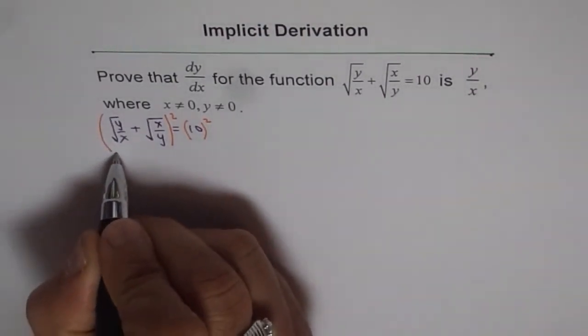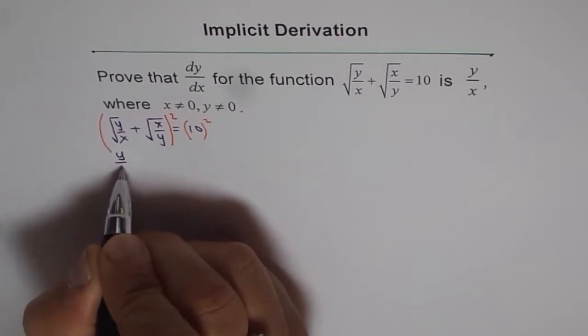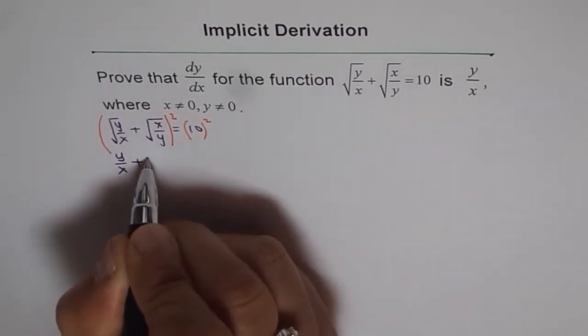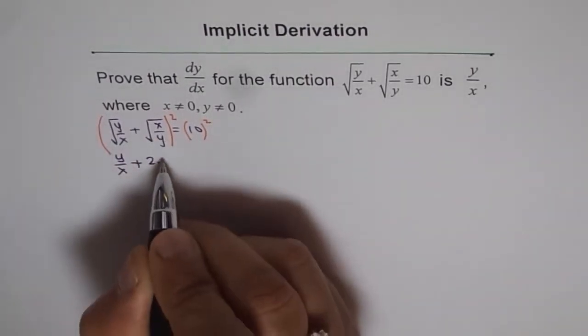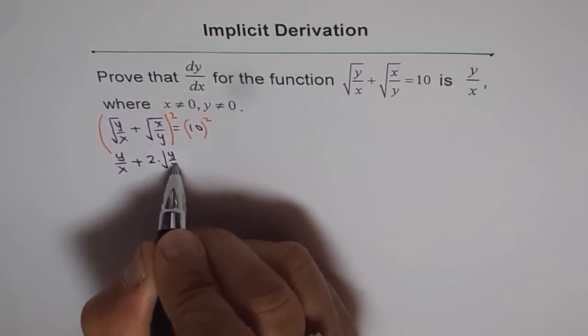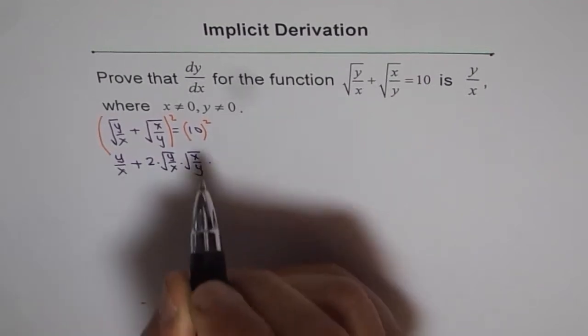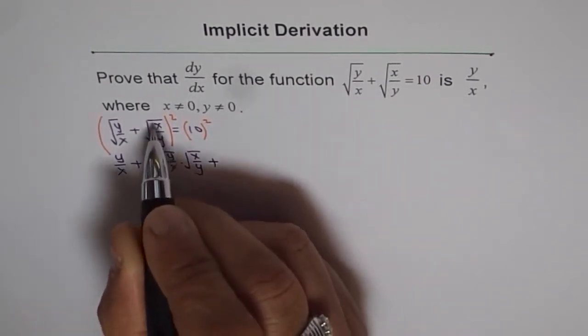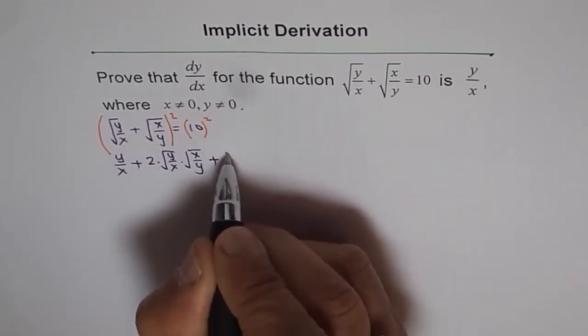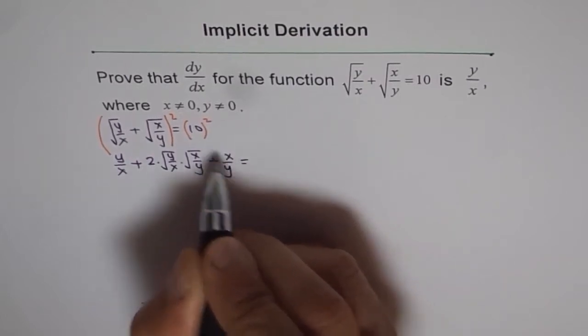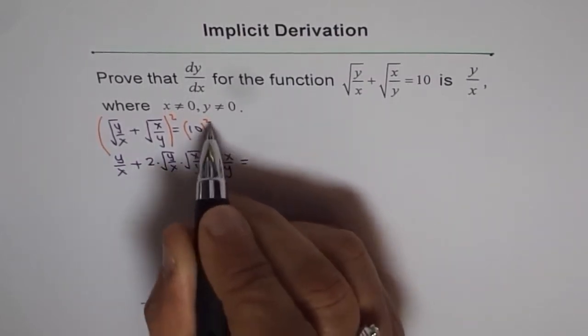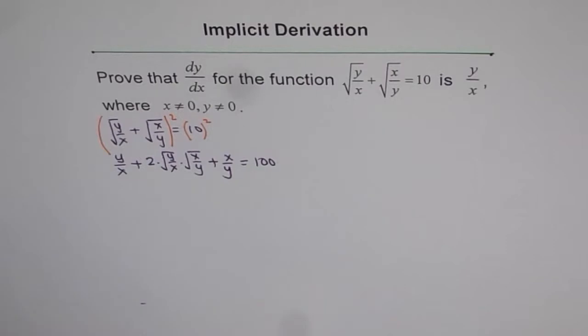So we will write a² is y/x plus 2 times a and b which is √(y/x) times √(x/y), plus b² which is x/y is equal to 10² which is 100. So that is what we get.